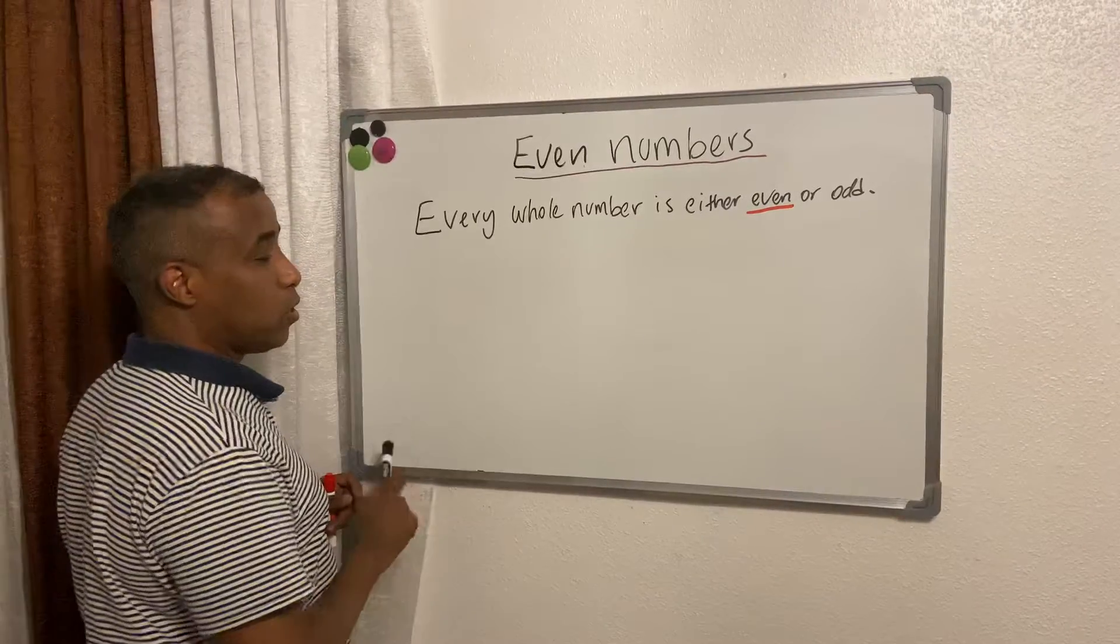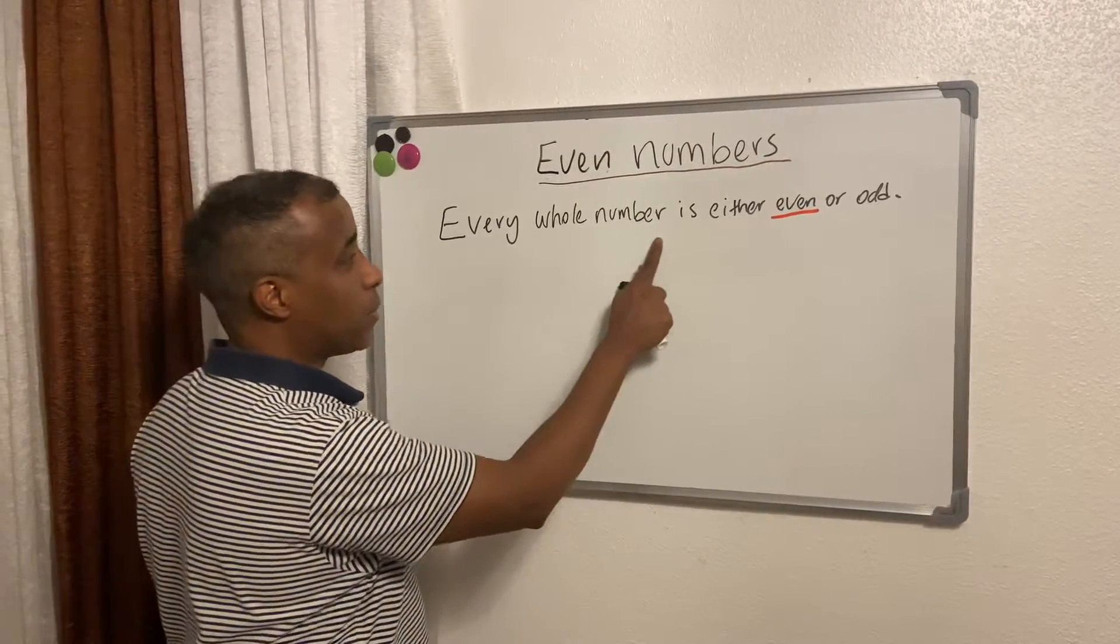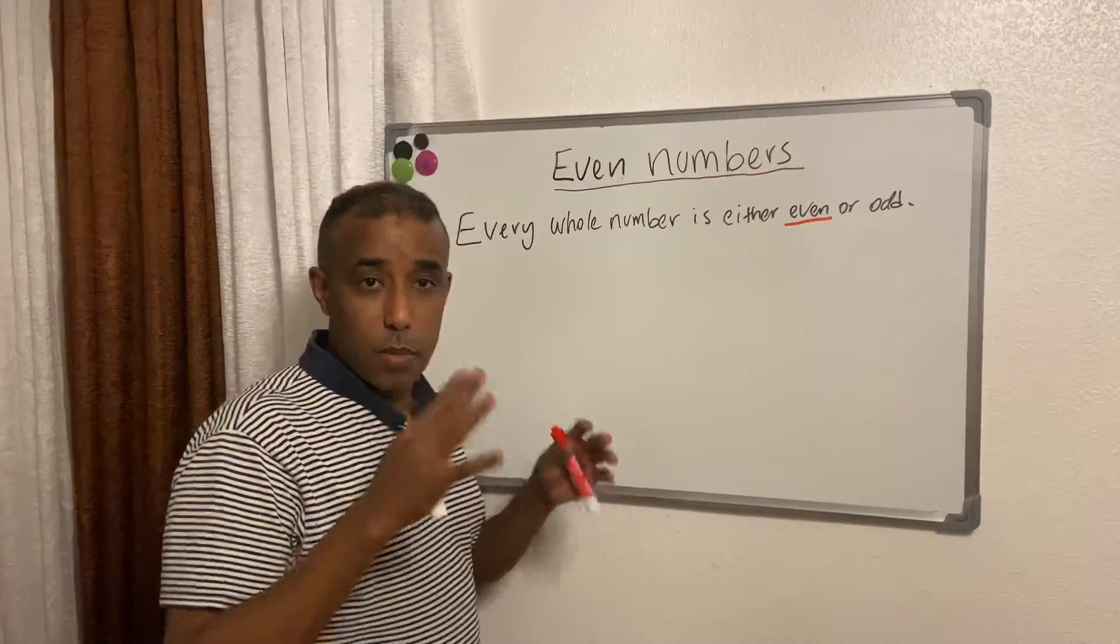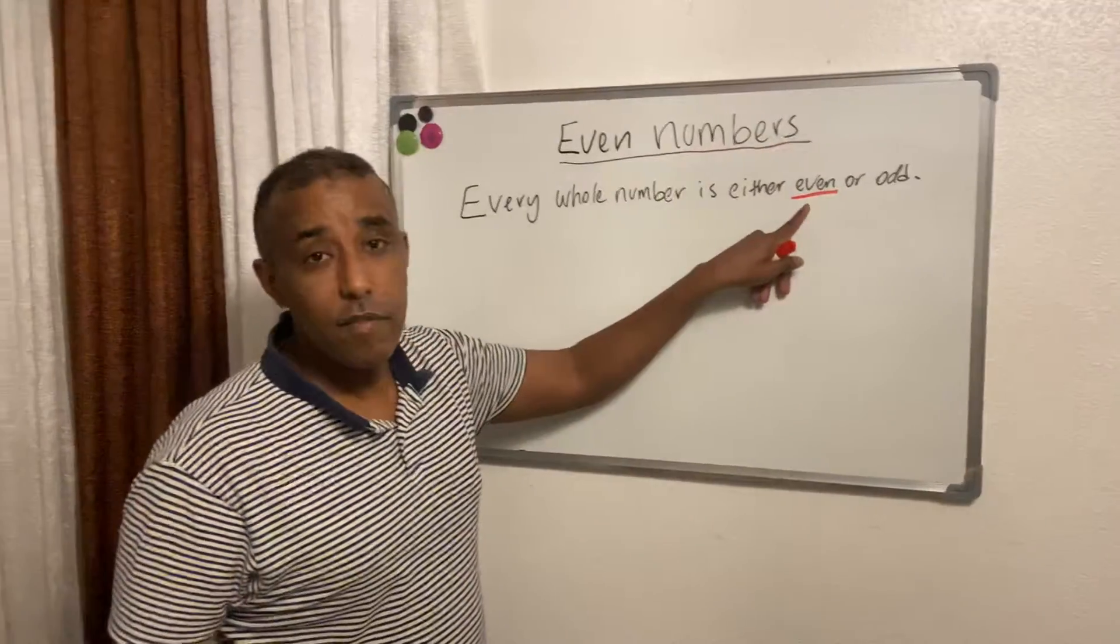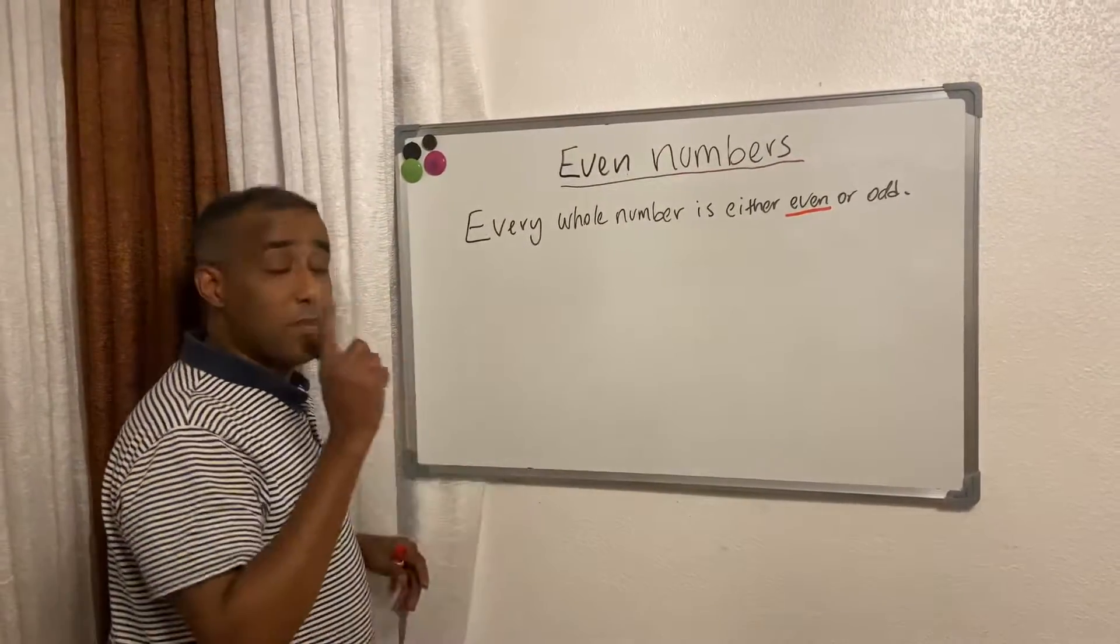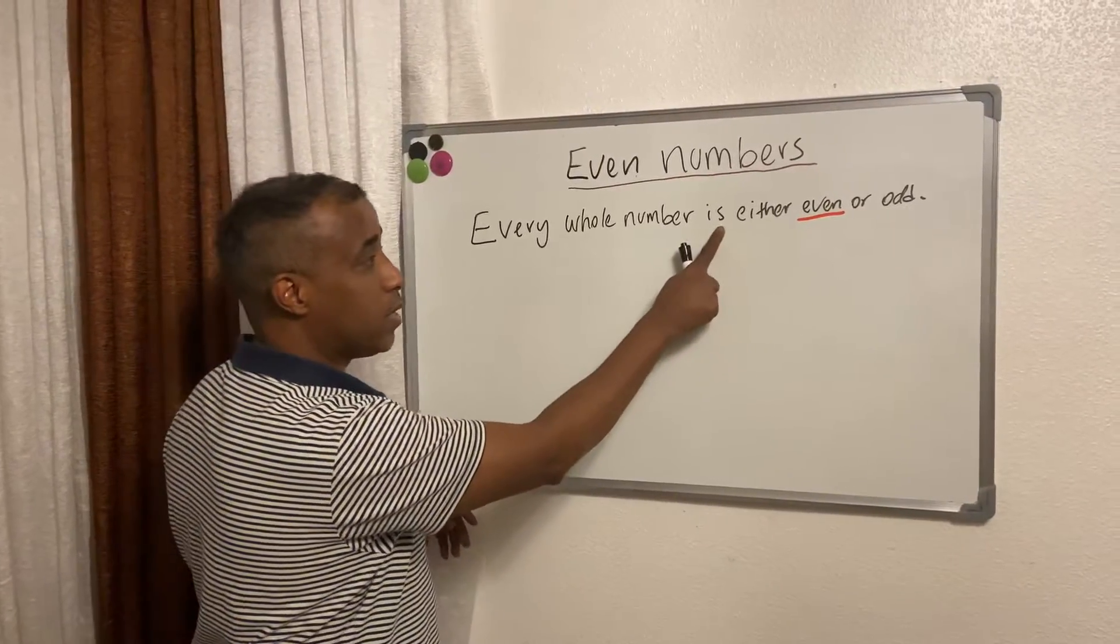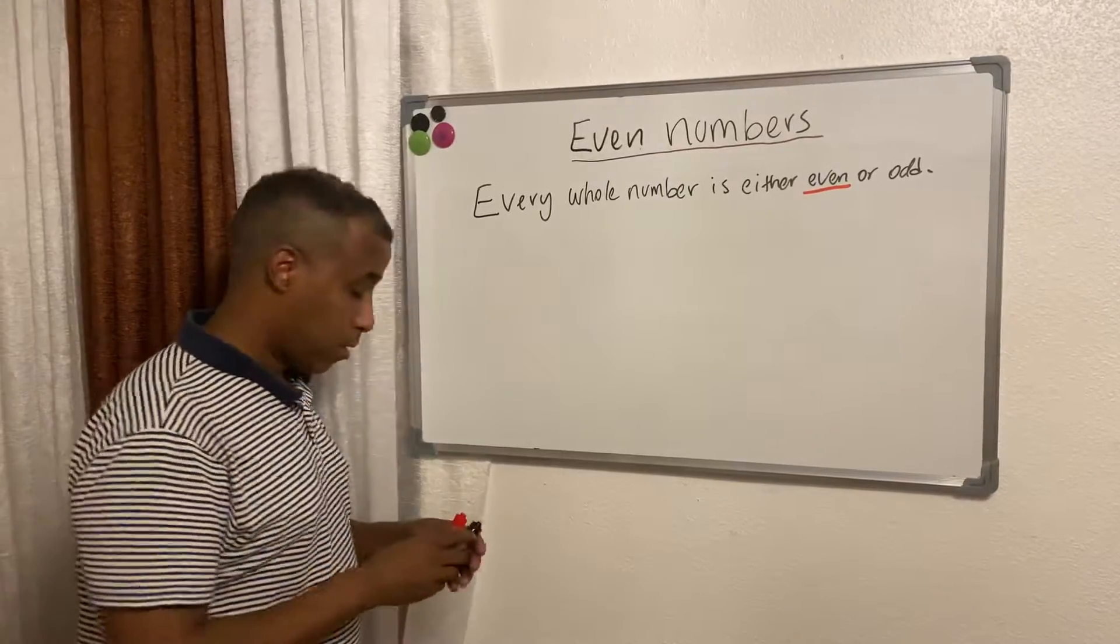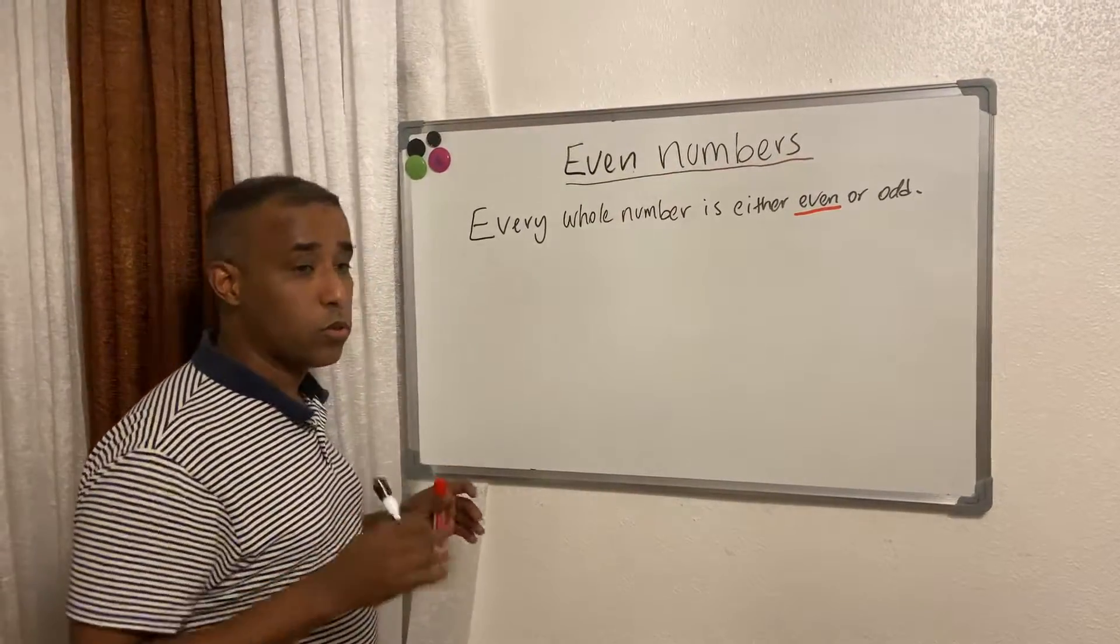First we need to define what even numbers is. Every whole number is either even or odd, but at the moment in this video we're going to concentrate only on even numbers because I've done briefly odd numbers. Let me read again: every whole number is either even or odd. I'm going to find out now and I'll give you examples.